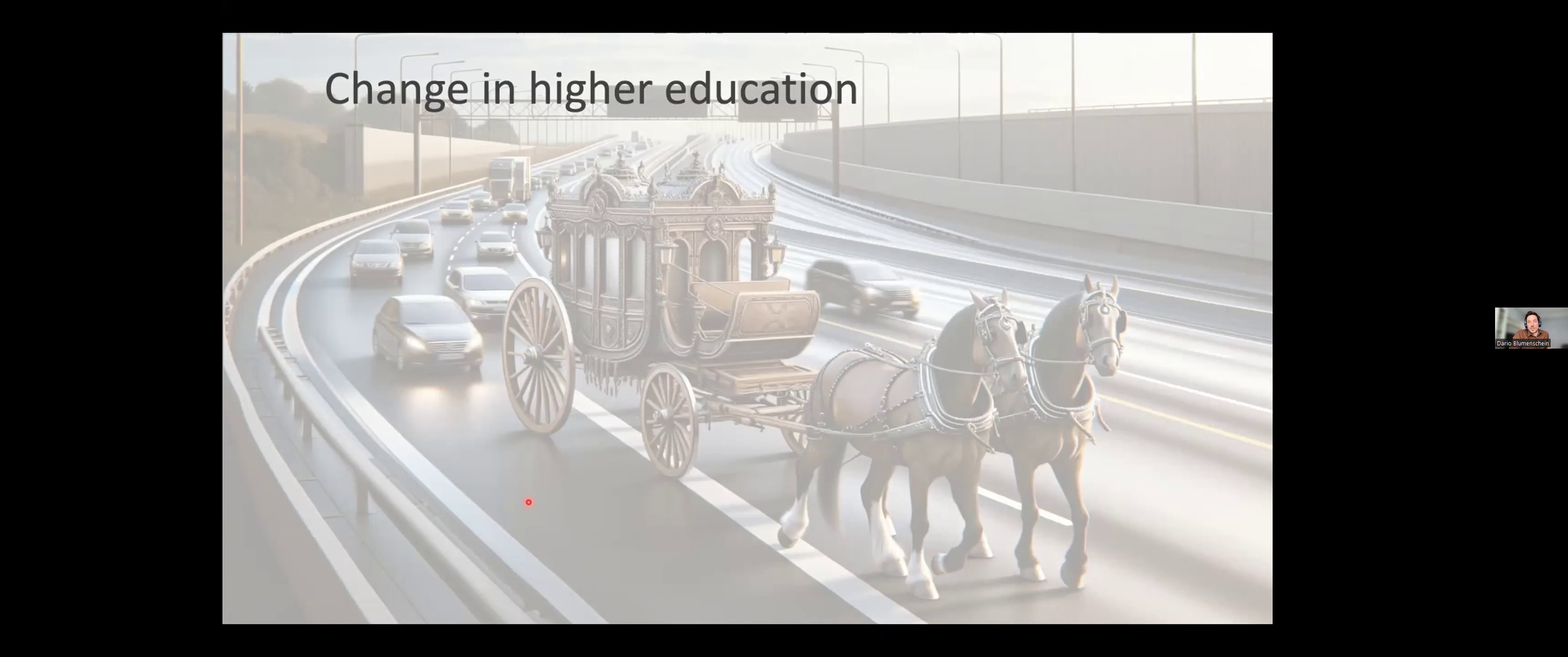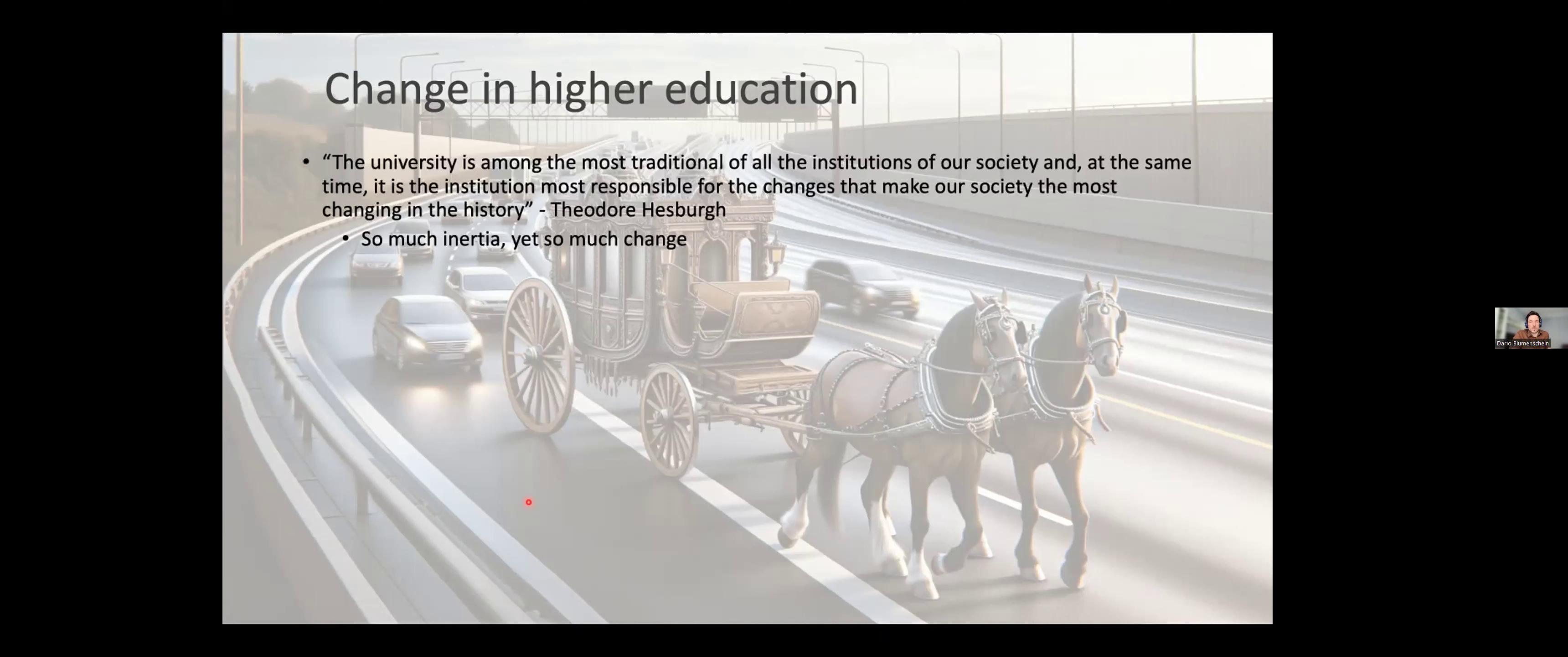For me, that was very interesting. I have this comparison of a horse carriage on a highway, quite a memorable one. Other researchers and scholars had similar notions. One of them is Theodore Hesburgh, an American educator who back in the 60s or 70s said that university is one of the most traditional of all institutions in society, but yet at the same time is most responsible for the changes that ended up resulting in us being the most changing society in history. So the summary is that there is so much inertia, yet there is still so much change. Some authors even say we need to study even non-change before we study theories of change.